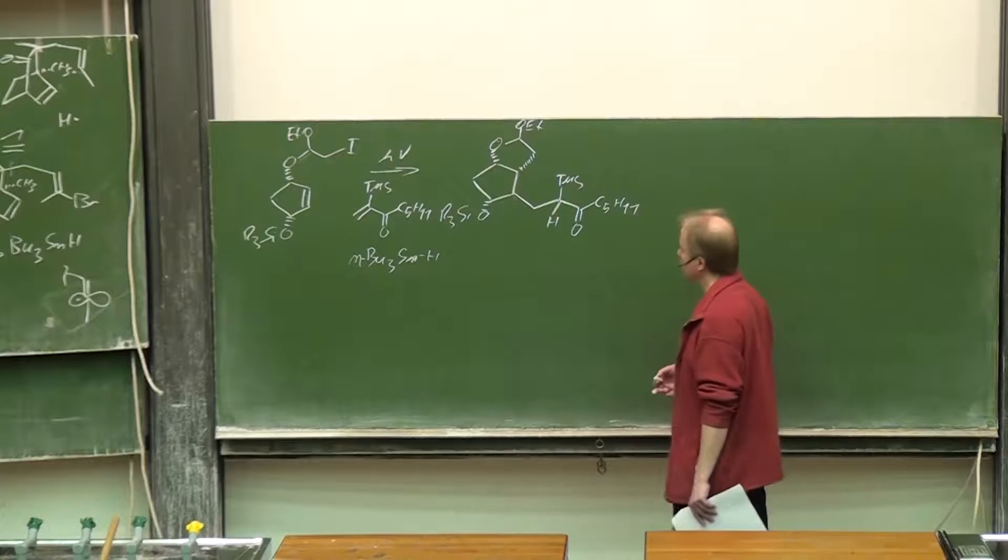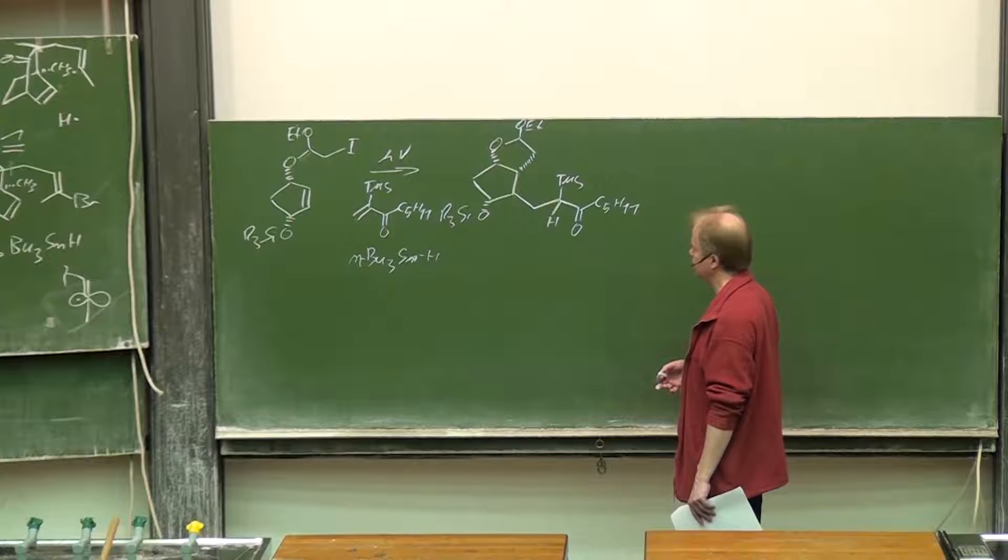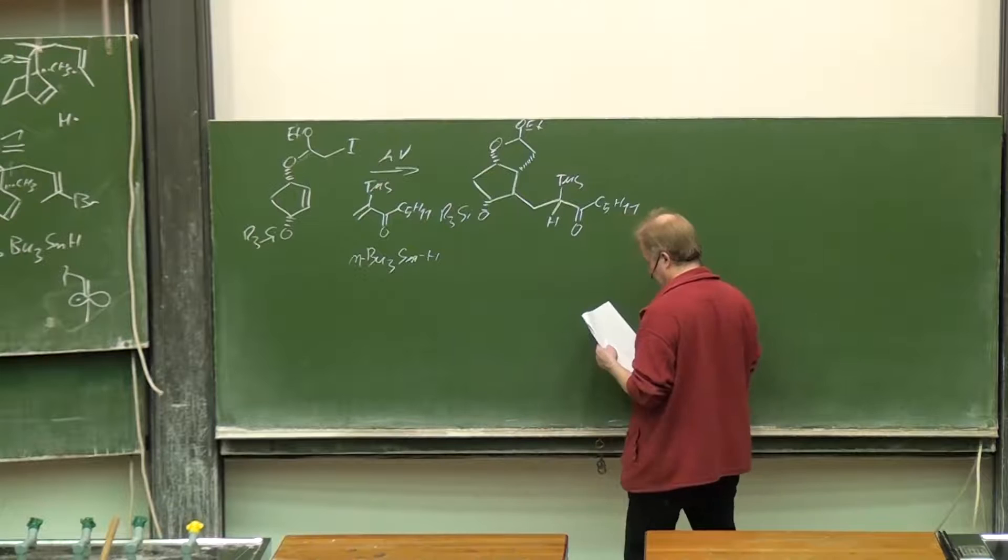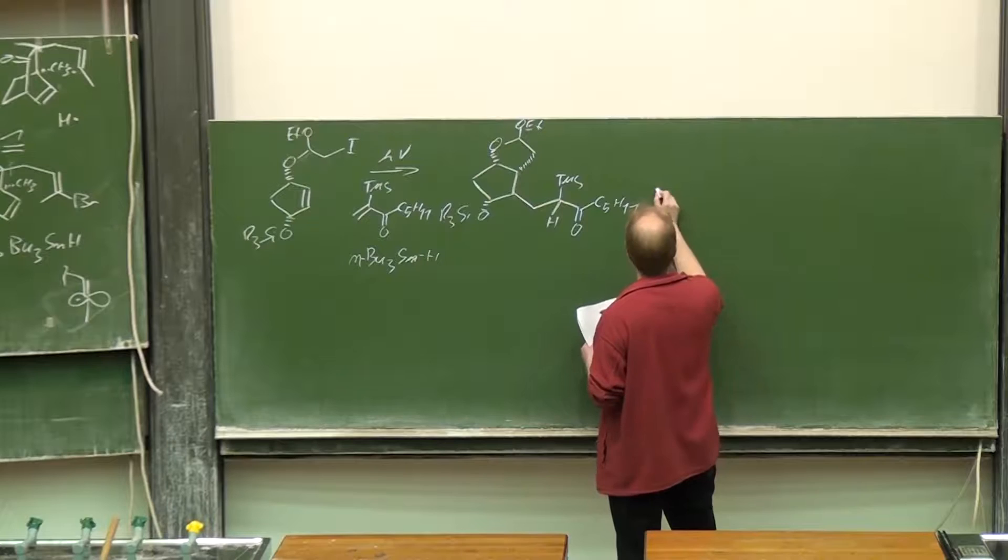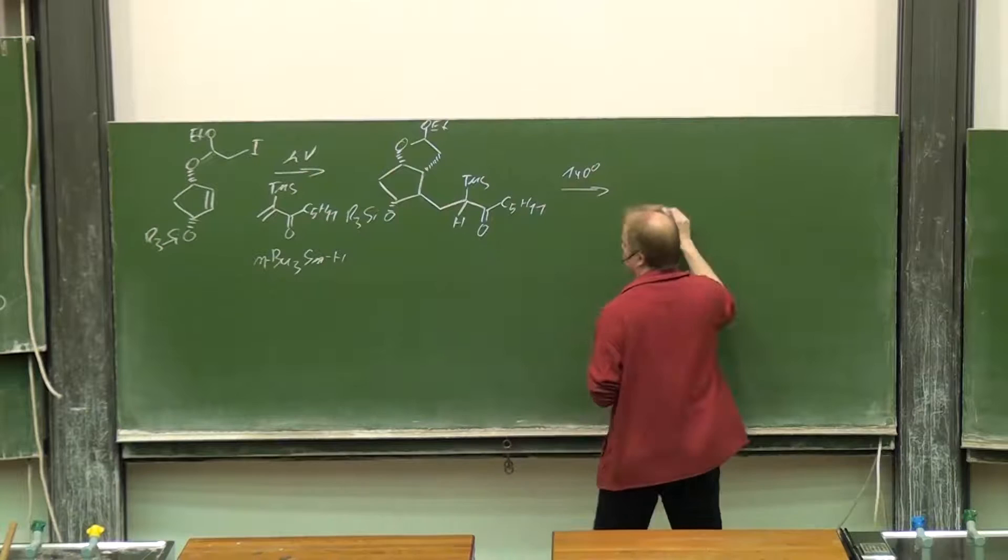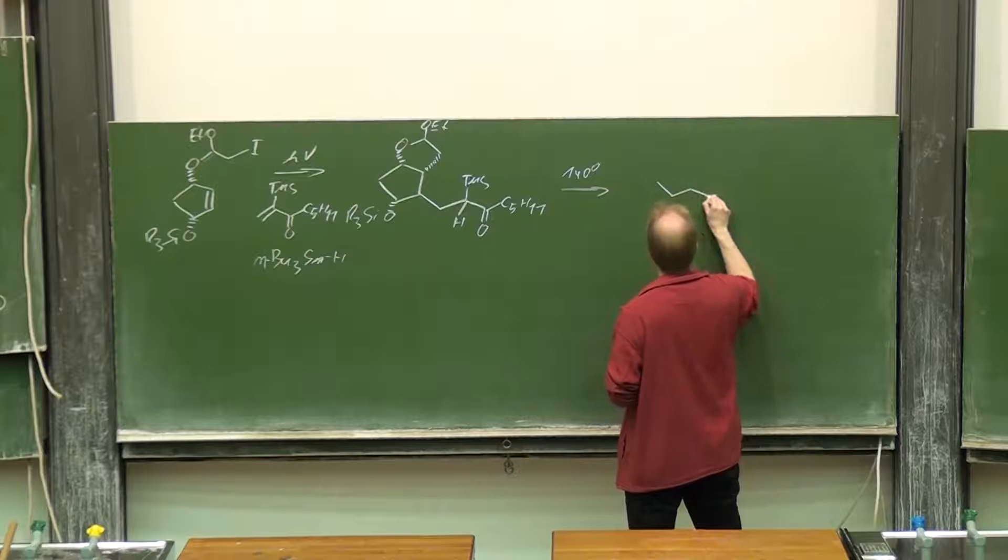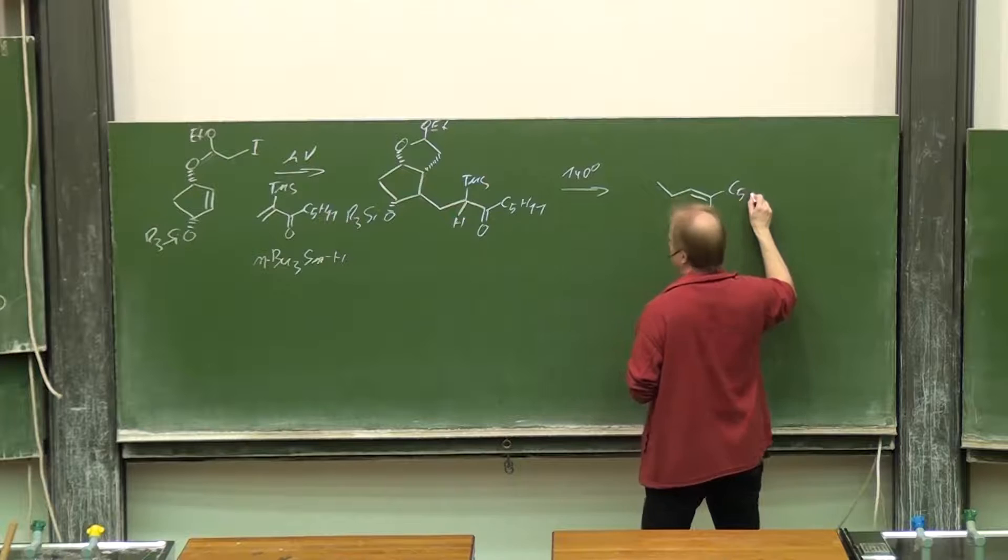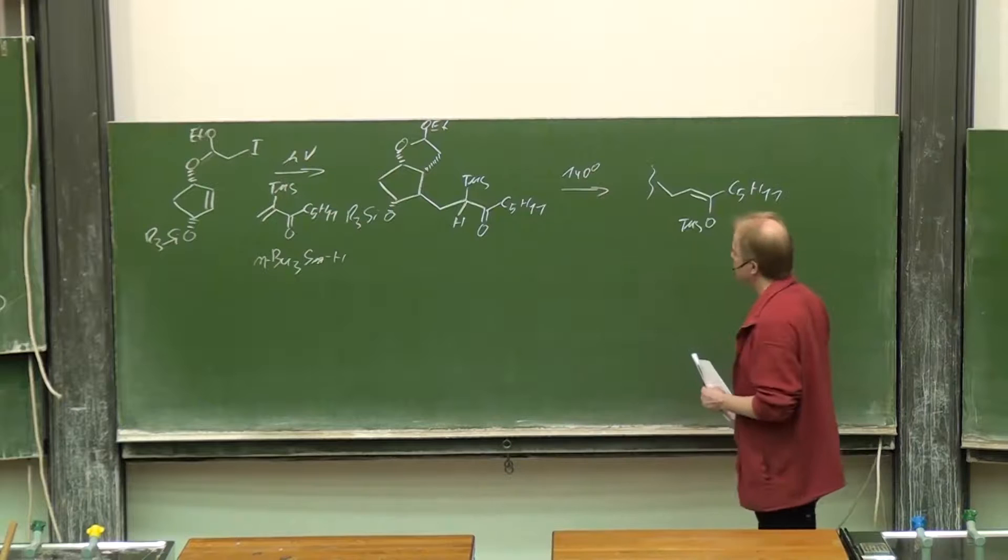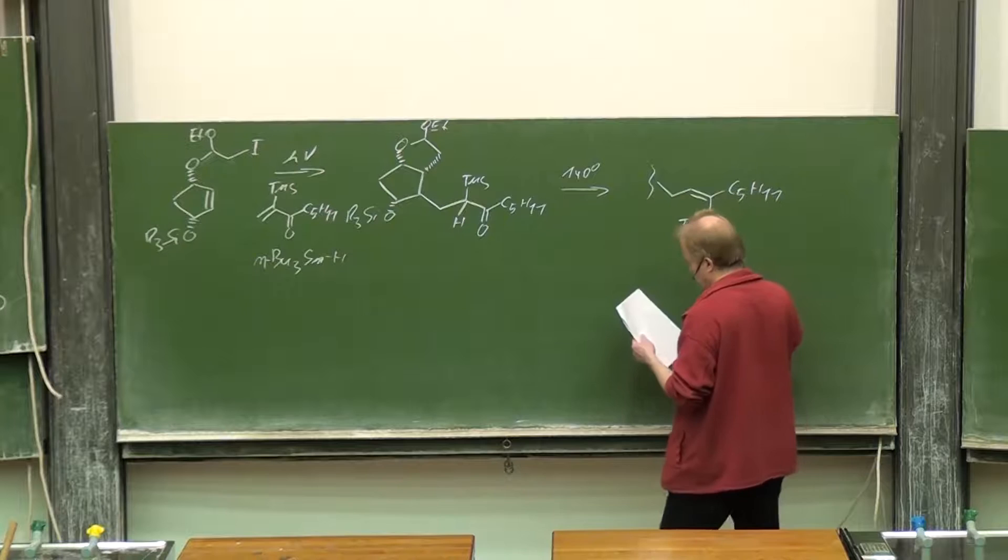Next step, you want to get rid of that TMS functionality. No problem. Just heating it up at 140 degrees. Rearrangement takes place. This has a name. The TMS enolate is formed. This is the so-called Brook rearrangement.